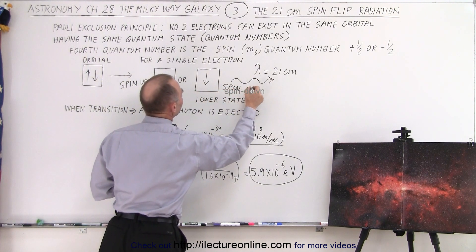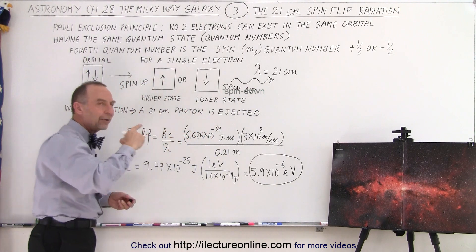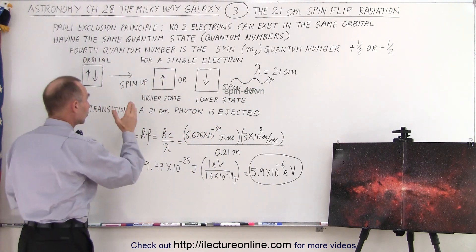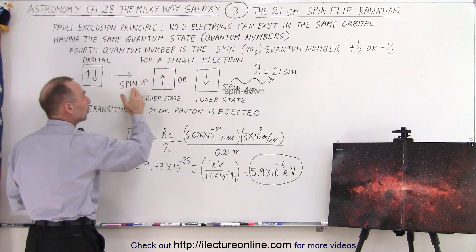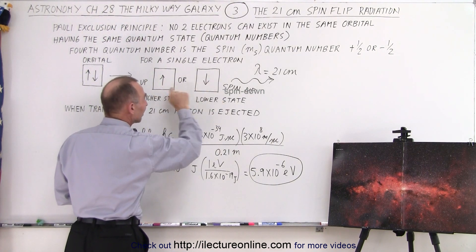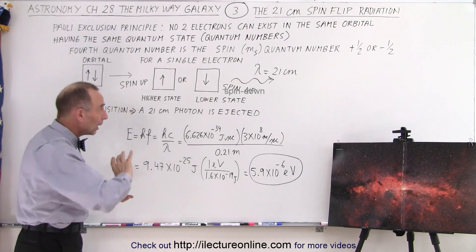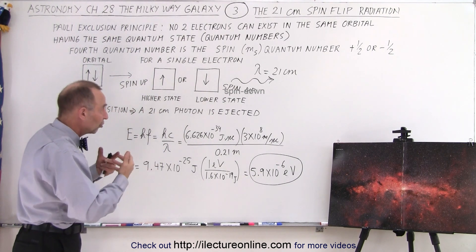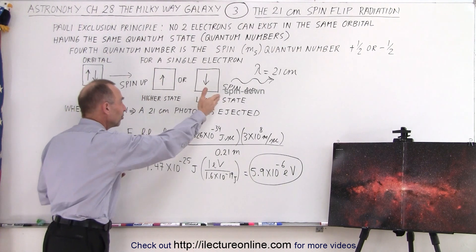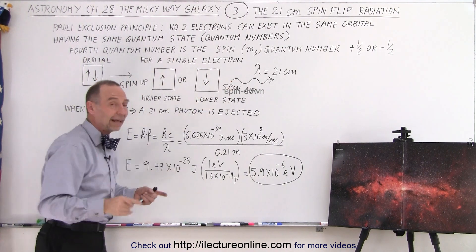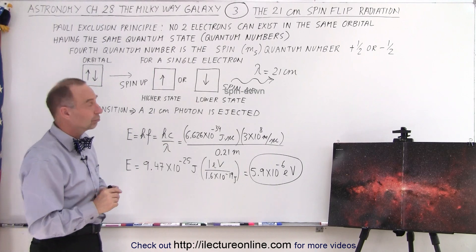And it turns out that one of them is slightly higher energy than the other. In other words, if an electron changes from a higher spin up condition to a lower spin down condition in the same orbital, then when it flips its spin, it goes from a higher state to a lower state and ejects a photon that has a wavelength of 21 centimeters.